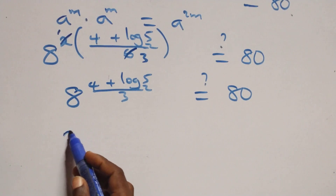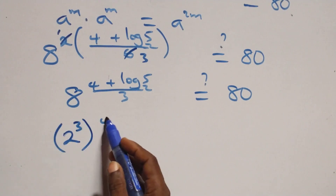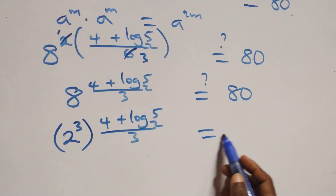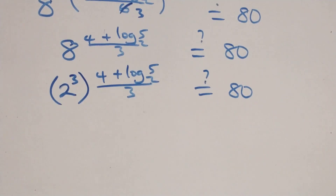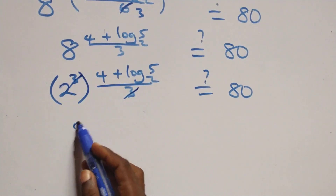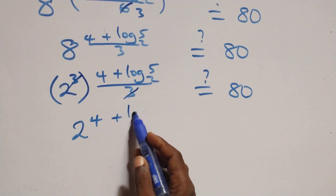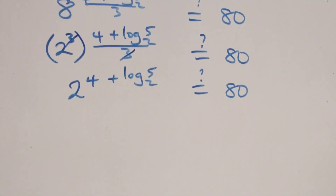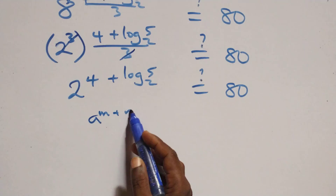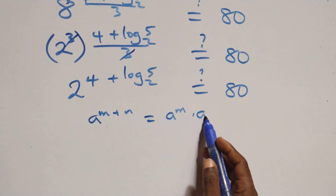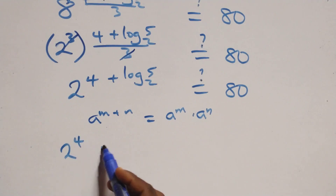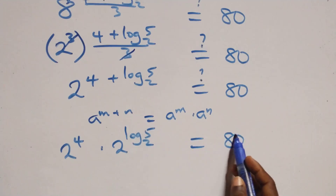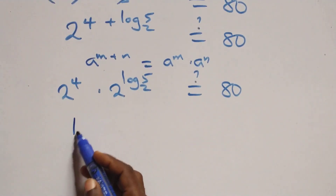At this point, 8 can be expressed as 2 raised to power 3, raised to power (4 + log₂5)/3. The powers multiply, and the 3s cancel each other, giving 2 raised to power (4 + log₂5). Applying the exponent law a raised to power (n + m) equals a raised to power n times a raised to power m, we get 2 raised to power 4 times 2 raised to power log₂5. Now 2 raised to power 4 equals 16.